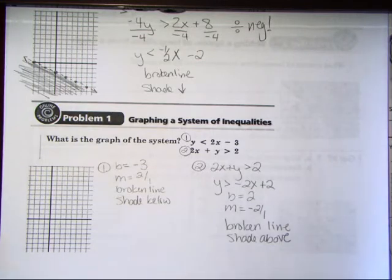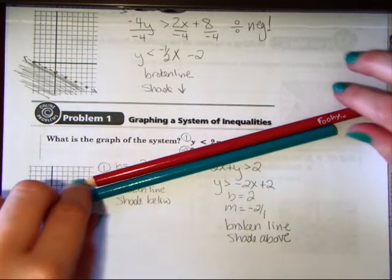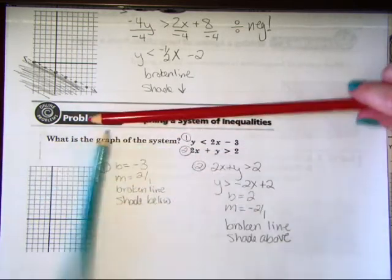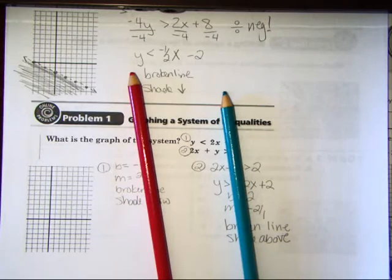Now the reason we're going to shade below, because we see the less than sign. Number 2, I've got to set this thing equal to y, so let me rewrite it. Now take the 2x away from each side. You get a negative 2x when you move it over. Don't forget about the plus 2. That is now a y equals equation, or y equals mx plus b format. Your y-intercept is 2. Your slope is negative 2 over 1, so down 2 right 1. And you are going to use, again, a broken line, because it is not equal to. And you will shade above, because it is greater than.